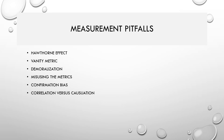Now let's understand measurement pitfalls. The first is the Hawthorne Effect — every metric you choose will impact the behavior of team members. The metrics you choose should not be threatening or cause people to seek a safety net. To avoid the Hawthorne Effect, ensure metrics are aligned with business outcomes. Vanity metrics are metrics tracked for the sake of tracking — they provide no useful information and have no relation to business outcomes.